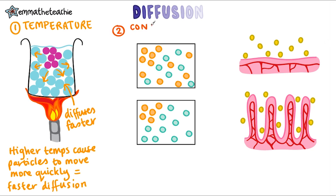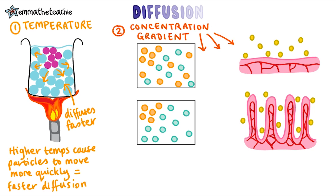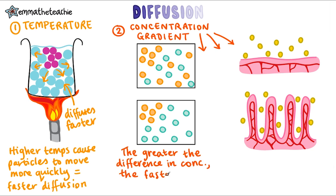The second factor affecting the rate of diffusion is the concentration gradient — this is the difference in concentration. The greater the difference in concentration, the faster diffusion will occur. Look at these two boxes: in which one will diffusion of the orange gas happen the fastest — Box A or Box B?